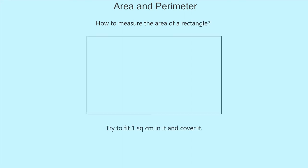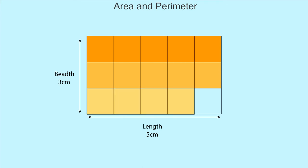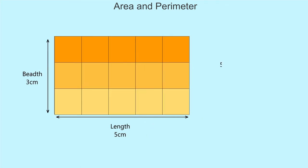Simple! Try to fit 1 square centimeter in it and cover it and the number of such unit it takes to cover the rectangle is its area. The breadth of the rectangle is 3 centimeters and length is 5 centimeters. This is how we covered it with unit squares of 1 square centimeter area. There are exactly 5 into 3 equal to 15 such squares so the area is 15 square centimeter.